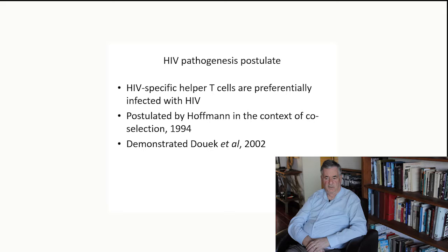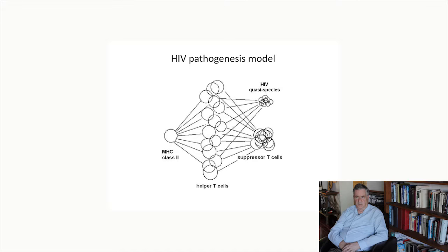HIV-specific helper T cells are preferentially infected with HIV. This was postulated in 1994 in the context of a co-selection model, and it was demonstrated experimentally by Dowek and his collaborators in 2002. The HIV pathogenesis model is that HIV preferentially infects helper cells specific for HIV, and that leads to a co-selection of HIV and the HIV-specific helper T cells.